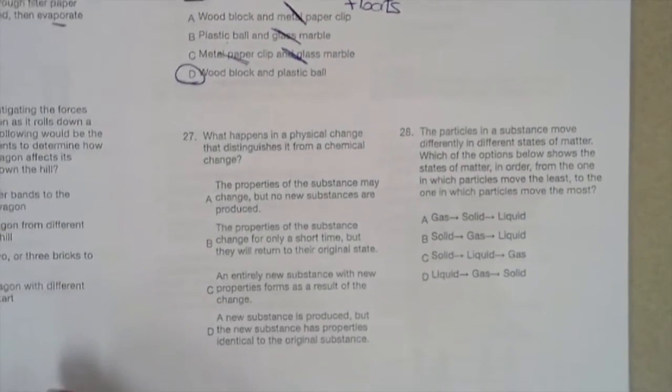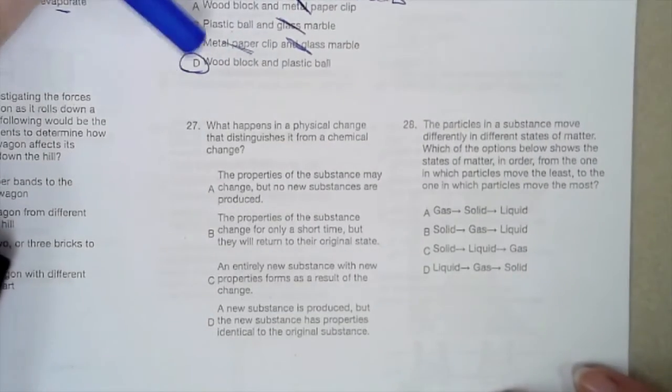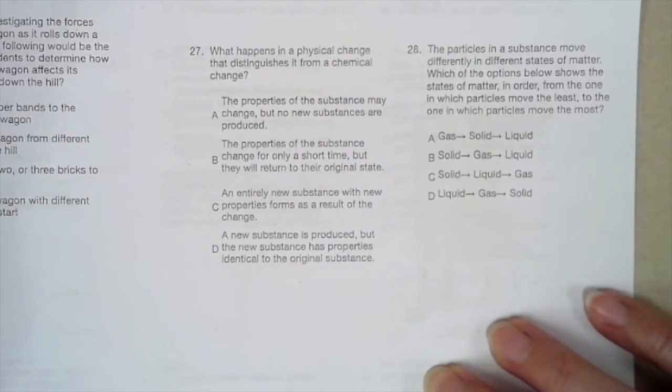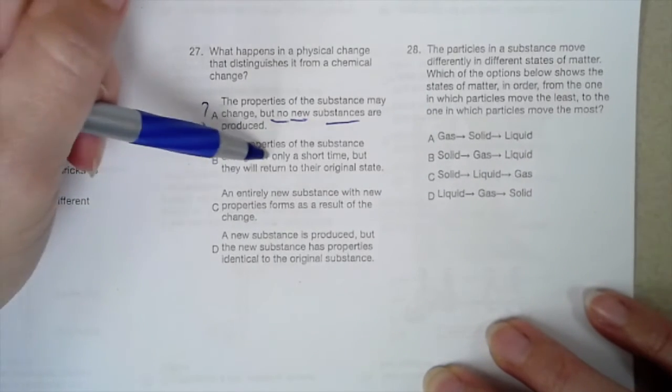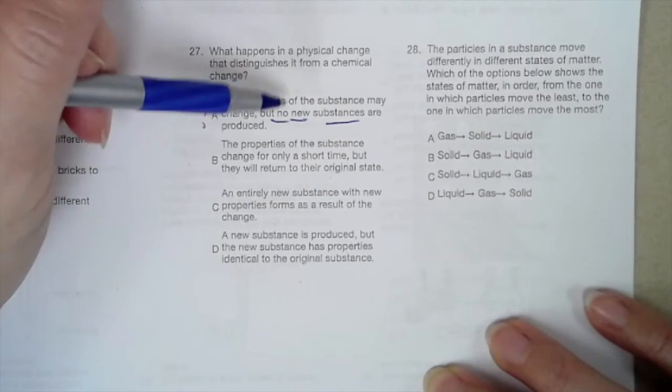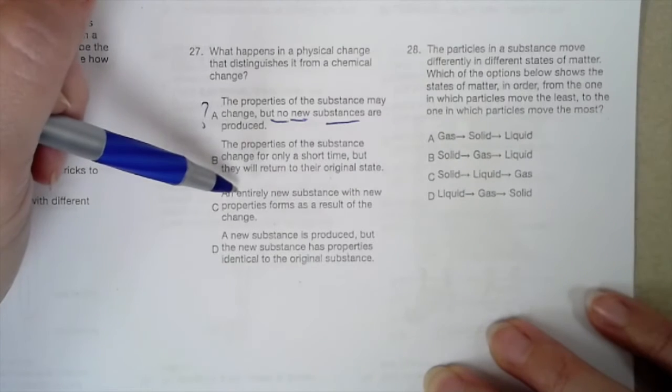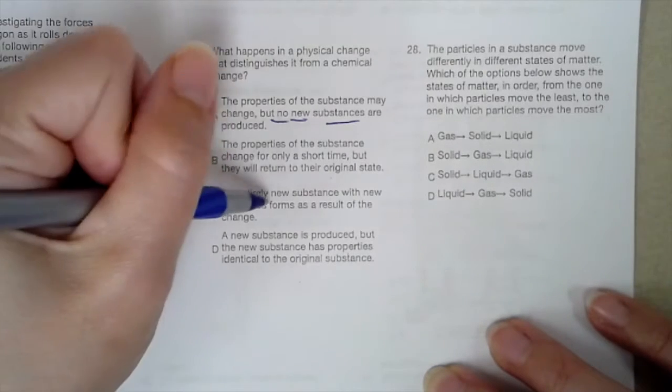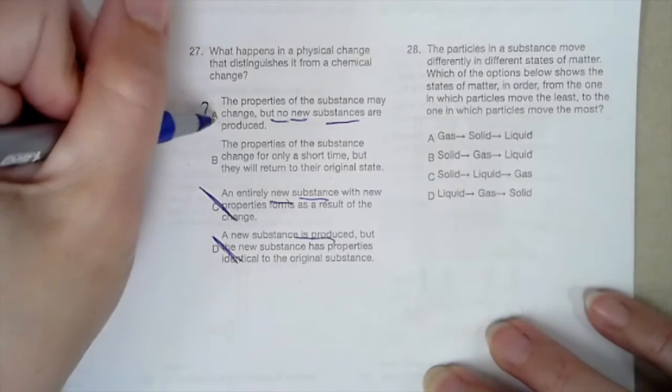Number 27. What happens in a physical change that distinguishes it from a chemical change? The properties of substances may change, but no new substances are produced. No new substances. That sounds like a physical change to me. The properties of a substance change for only a short time, but they will return to their original state. I don't know that in physical or chemical changes they necessarily return. An entire new substance with new properties forms as a result of the change. A new substance? That's chemical. A new substance is produced? That's chemical. So the most likely answer is letter A.